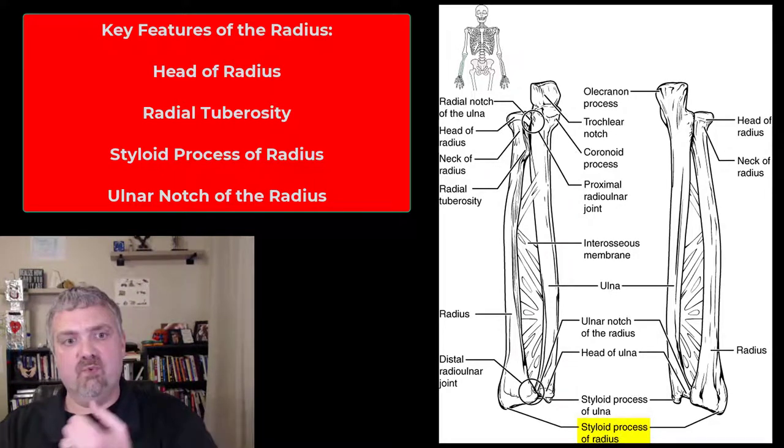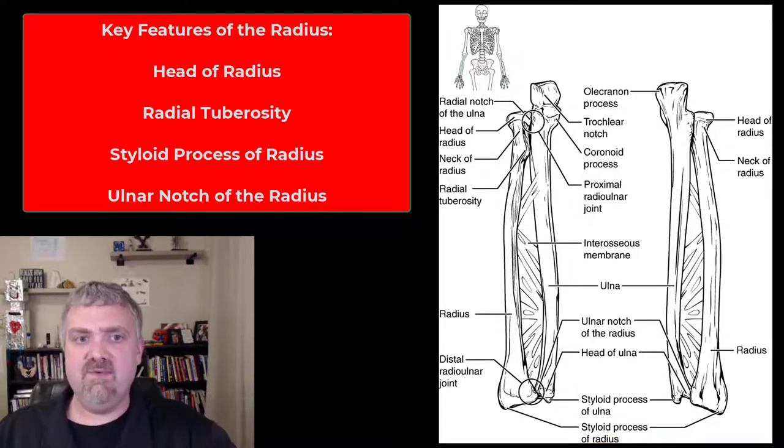You'll see that both the radius and ulna have a styloid process that kind of encases your wrist there. So those are going to be the key things on the radius: the head of the radius, the radial tuberosity, and the styloid process of the radius.